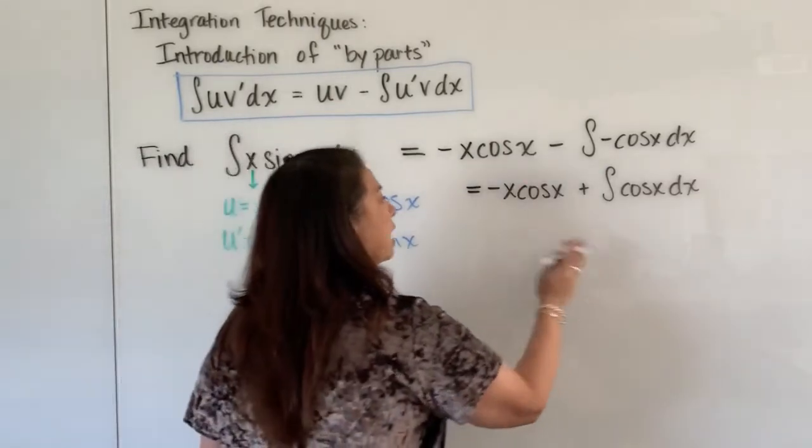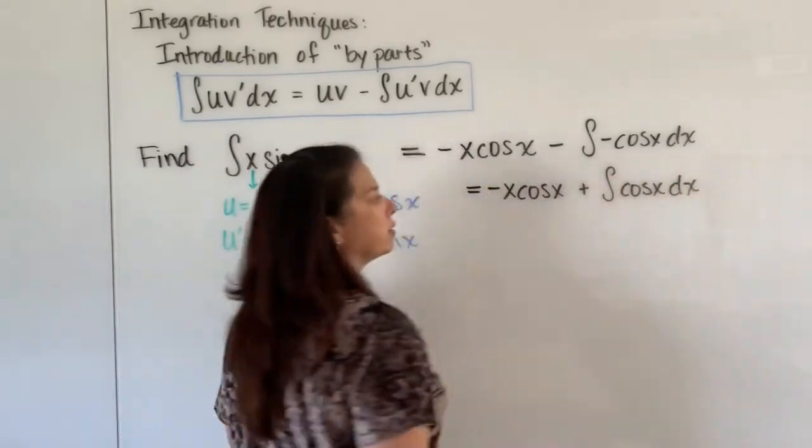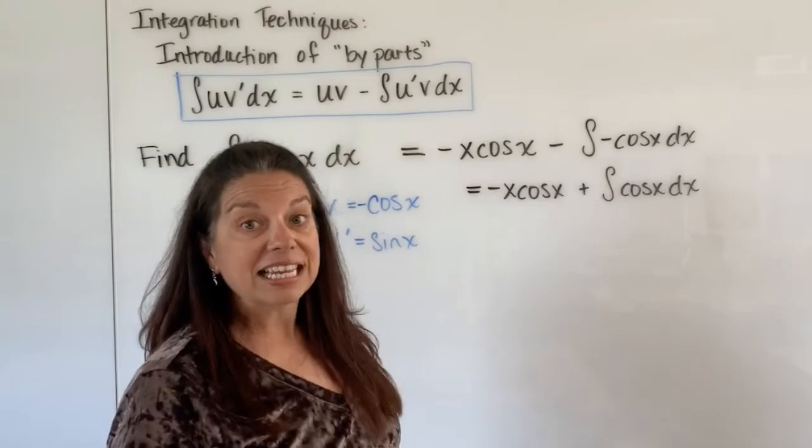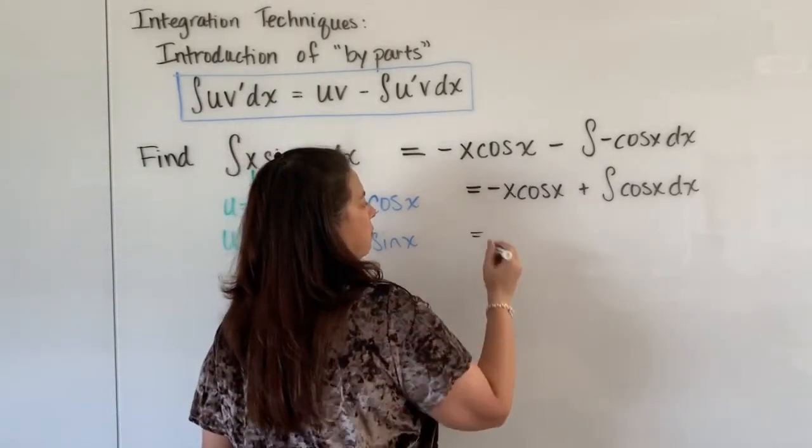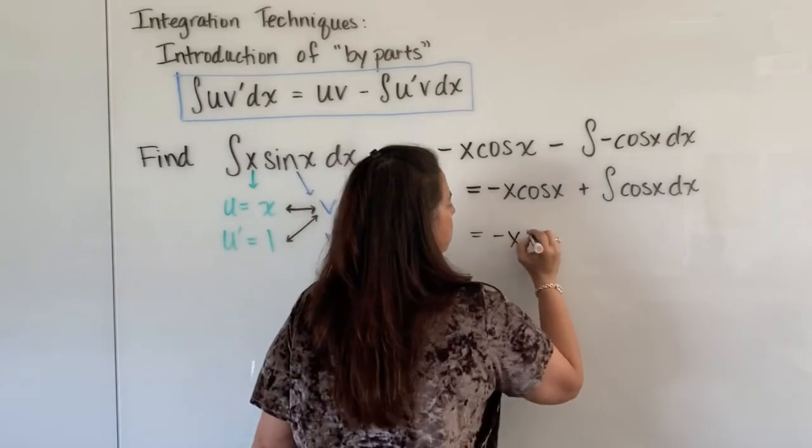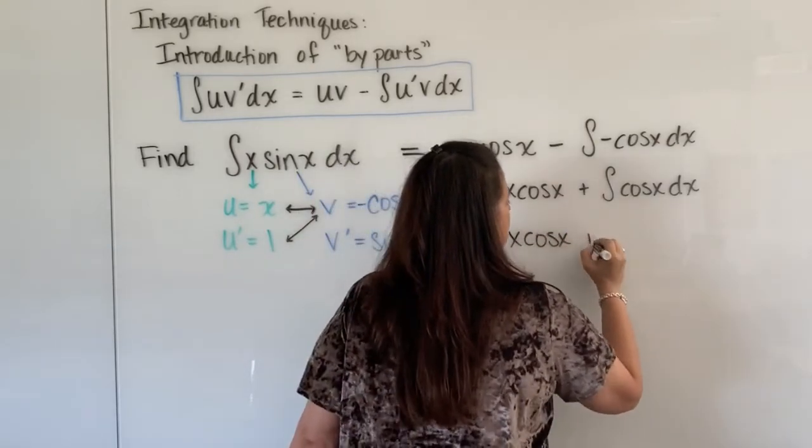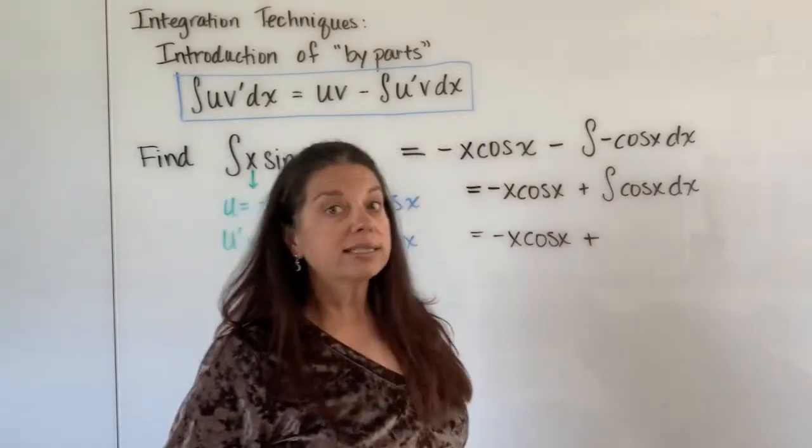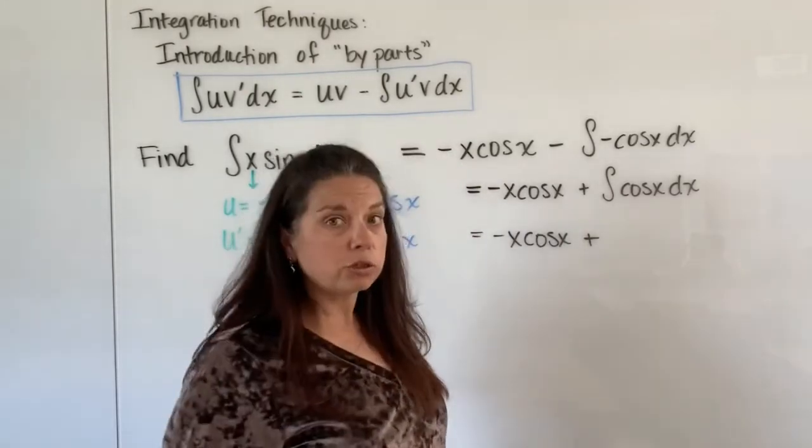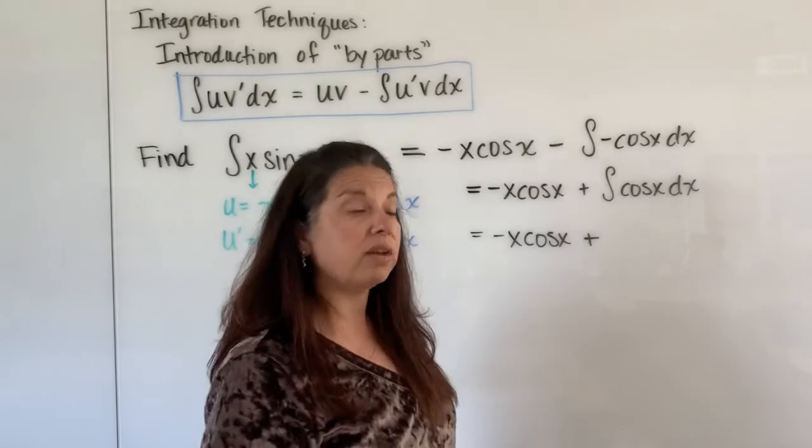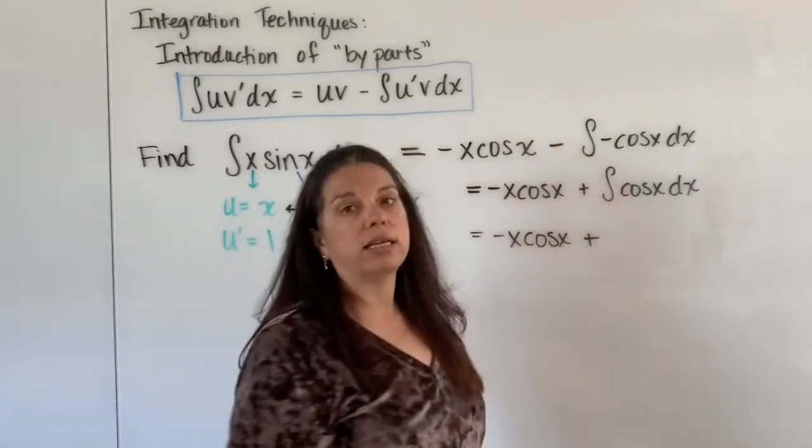All right I would be done if I just knew what the integral of cosine x is. Well I think I do if you can imagine. I have this is equal to negative x cosine x plus, and just think what is the anti-derivative of just cosine x. It is the function that if I took its derivative I would get exactly cosine x.